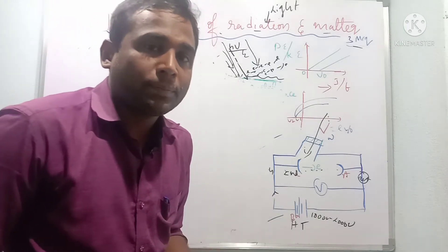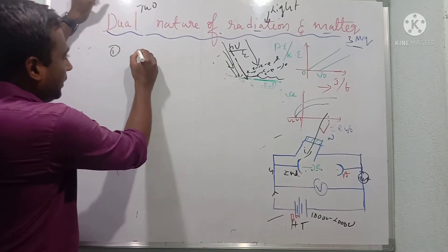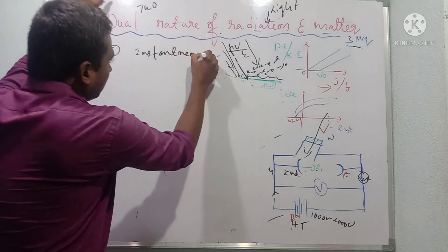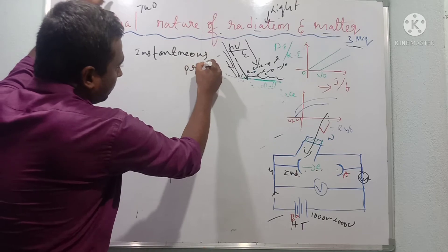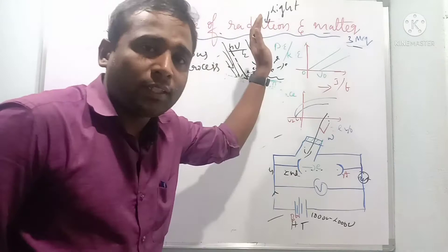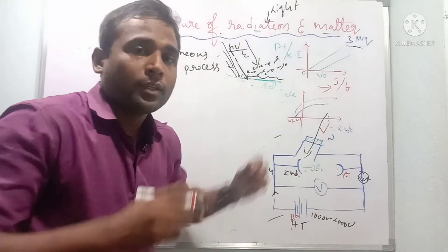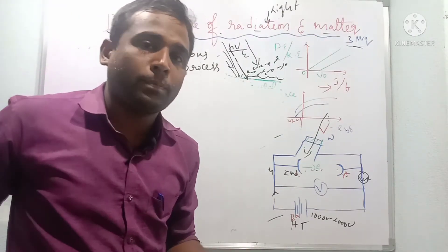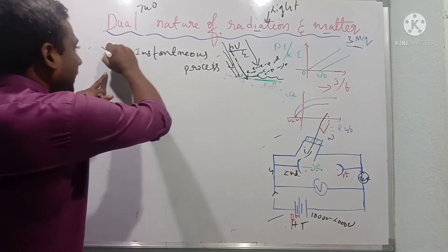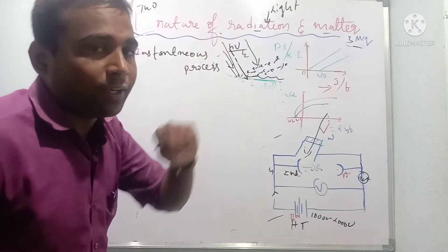Now the laws or observations from the photoelectric effect experiment. First: it is an instantaneous process. As soon as light energy falls on the metal surface, liberation of electrons takes place — there is no time gap. Electrons are emitted instantly when light falls on the metal surface.